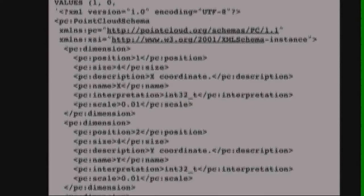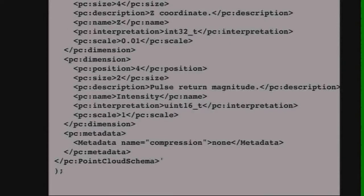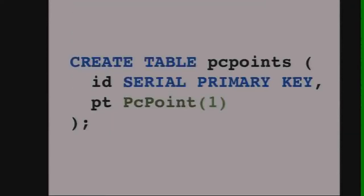You can see PCID one show up — it's actually quite verbose, and this is just four dimensions. So now we can create our table. For demonstration, we're going to create a table that has a PC point column. You'll only use points transiently in operations; you'll use patches for storage. But we're going to make up a point table here.